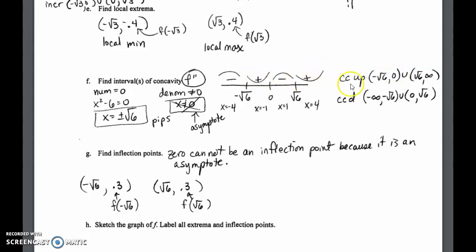Those are the written-out intervals of concavity. We find the inflection points: as long as concavity changes — from concave down to concave up — this is a point of inflection. Remember that x = 0 is not a point of inflection; it's a hyper-critical value but it's an asymptote, not a point, so it doesn't count.